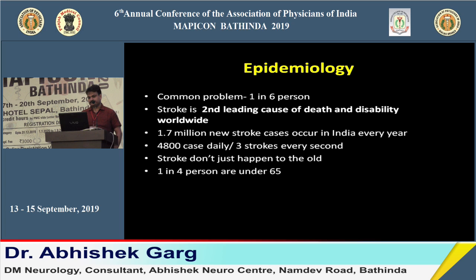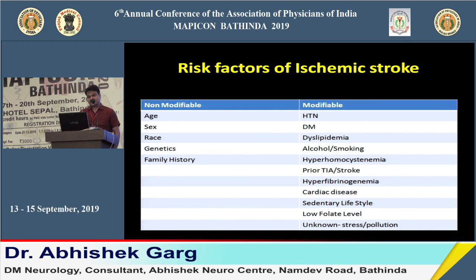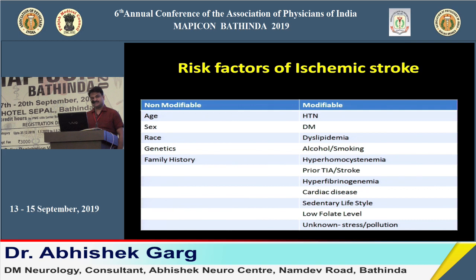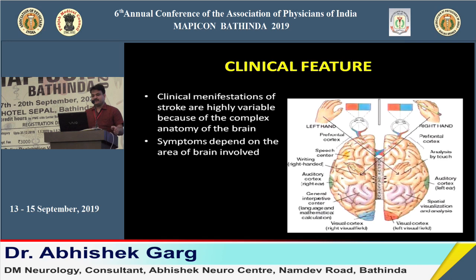Risk factors for ischemic stroke are the same as for cardiovascular diseases. They are divided into non-modifiable and modifiable categories. Non-modifiable risk factors include age, sex, race, genetics, and family history. Modifiable risk factors include hypertension, diabetes, high cholesterol, high fibrinogen level, hyperhomocysteinemia, low folate level, underlying cardiac disease, and pre-existing history of TIA or stroke.